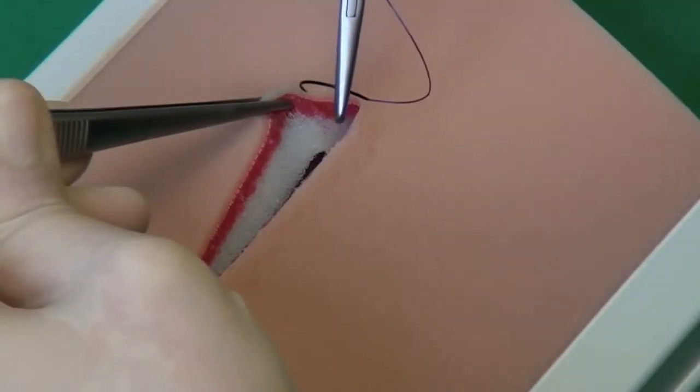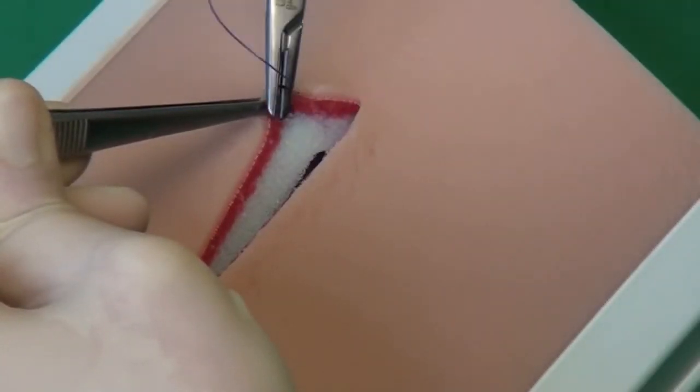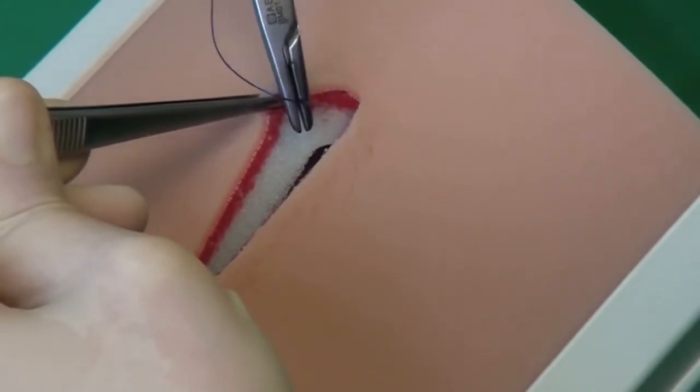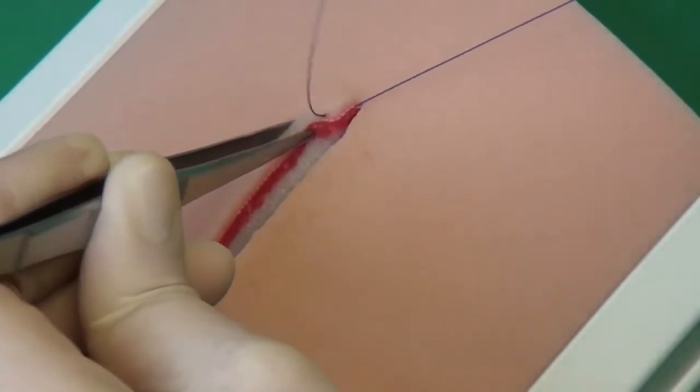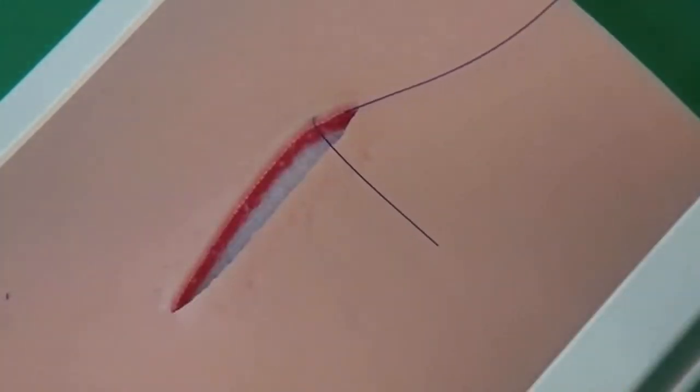The suture pad is used to simulate the skin. One starts with a v-shaped stitch, which is placed in the skin intracutaneously, just below the surface.